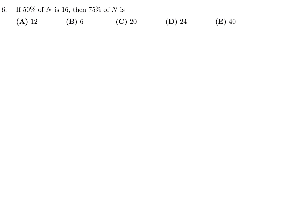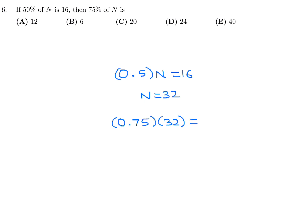Question 6: If 50% of n is 16, what is 75% of n? 0.5 times n equals 16, so multiplying both sides by 2 gives n equals 32. Taking 75% of 32 gives 24. So number 6, the answer is D.